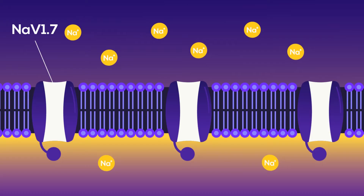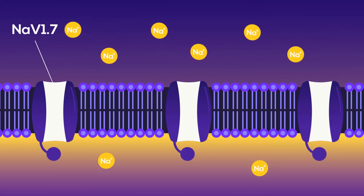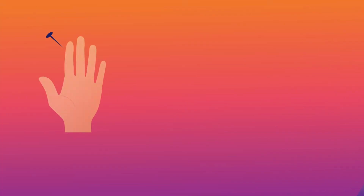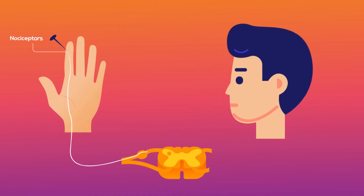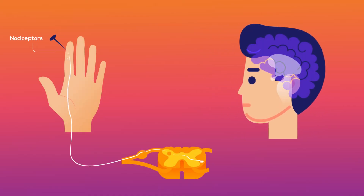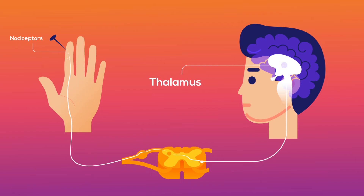If this channel stops working, the nociceptor stops working. The activated nociceptor sends signals along nerves and the spinal cord to the brain region called the thalamus.